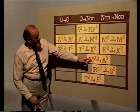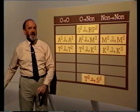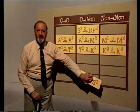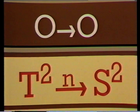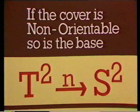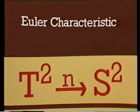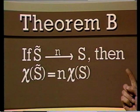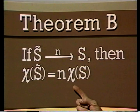So that rules out the non-orientable to orientable possibilities. But as we've seen, we can have orientable covering a non-orientable surface. What about T2 covering S2? Both surfaces are orientable, so Theorem A doesn't say anything about this. But now look at Euler characteristic. The torus has characteristic 0 and the sphere has characteristic 2. Theorem B says that if we have an n-fold cover, then the Euler characteristic of the covering surface is n times the Euler characteristic of the base surface.